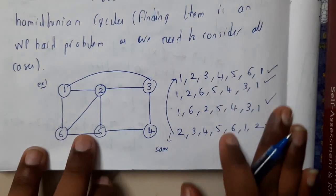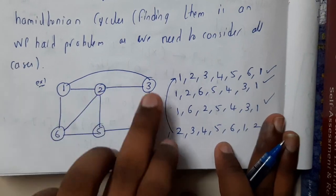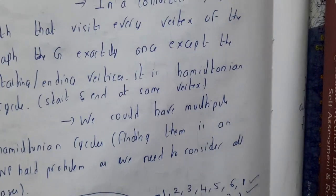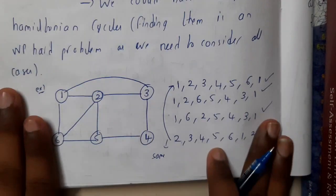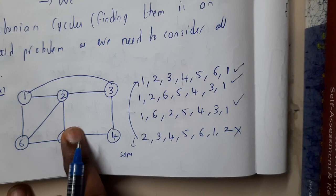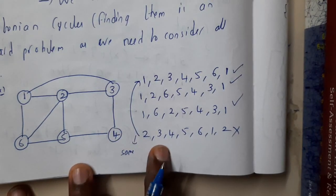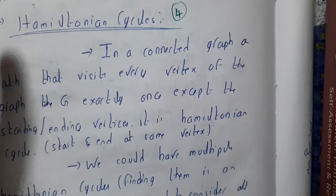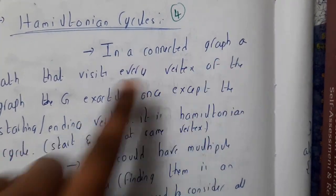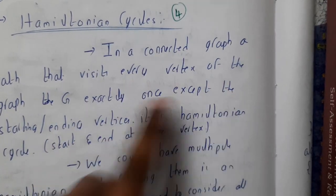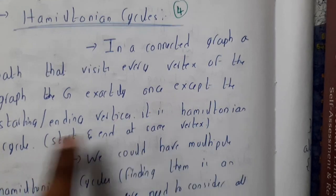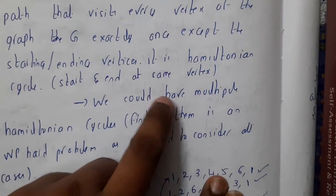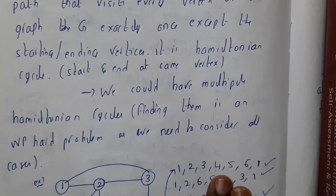So if you take an example here, from 1 you will be starting: 1, 2, 3, 4, 5, 6, return back to 1 — simple, right? That is a Hamiltonian cycle. A Hamiltonian cycle in a connected graph is a path that visits every vertex of the graph exactly once, except the starting or ending vertices. The starting and ending vertices should be the same — that is the only condition.